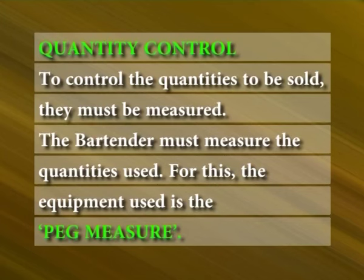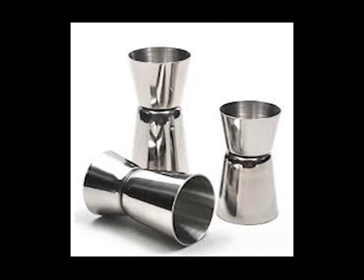Quantity control: To control the quantities to be sold, they must be measured. The bartender must measure the quantities used. For this, the equipment used is the peg measure — a stainless steel or brass measuring device designed to measure 1 ounce (30 milliliters) and 2 ounces (60 milliliters). Glassware: In addition to the quantity of liquor for the preparation of every drink, the control of overall quantity of drinks is achieved by standardizing the glassware used for service.